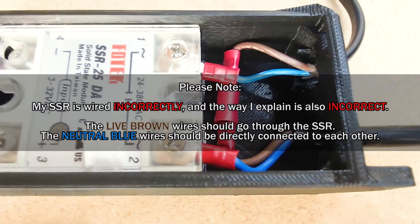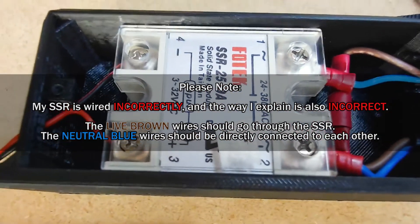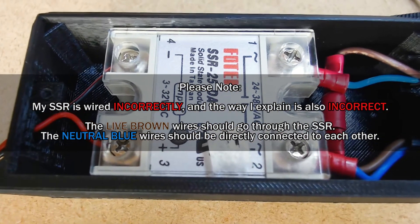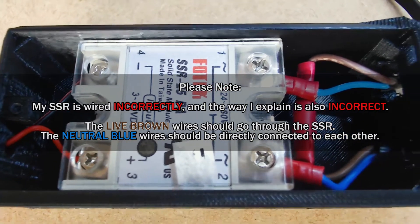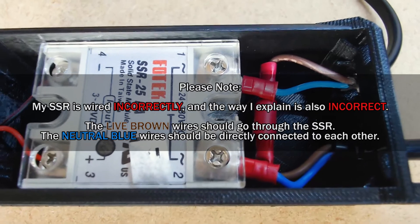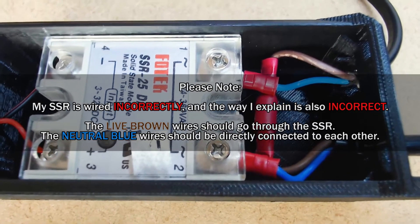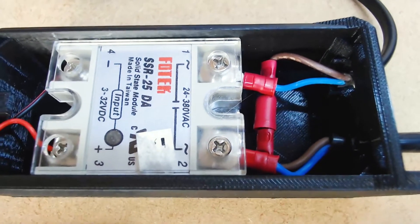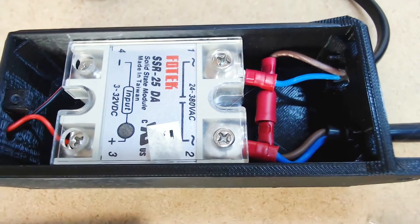So the way the SSR works is that when the black and red on this side have a voltage across them, they connect the two blues on the other side. Do not connect brown to blue, blue to brown, cross them over or anything like that. I'll show you a diagram of how this should be connected up.